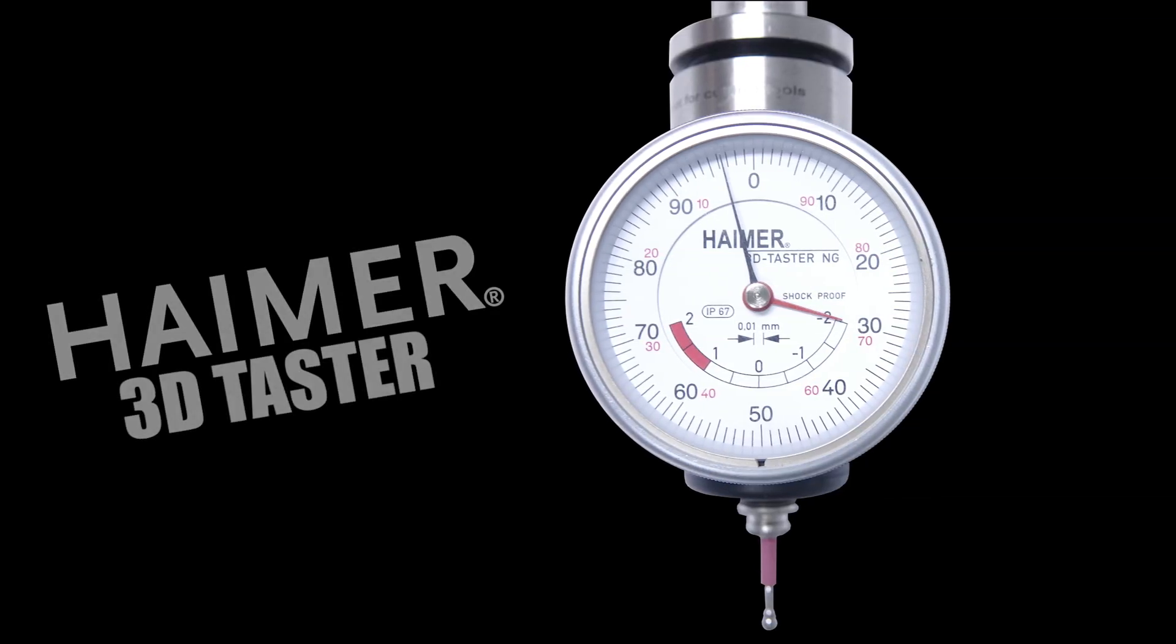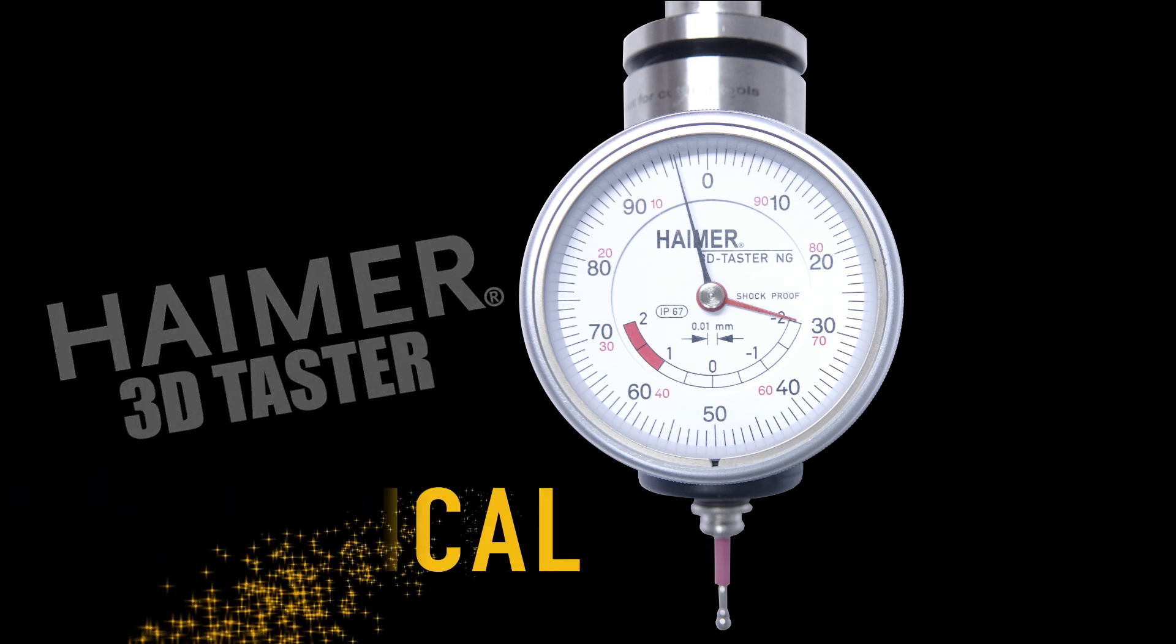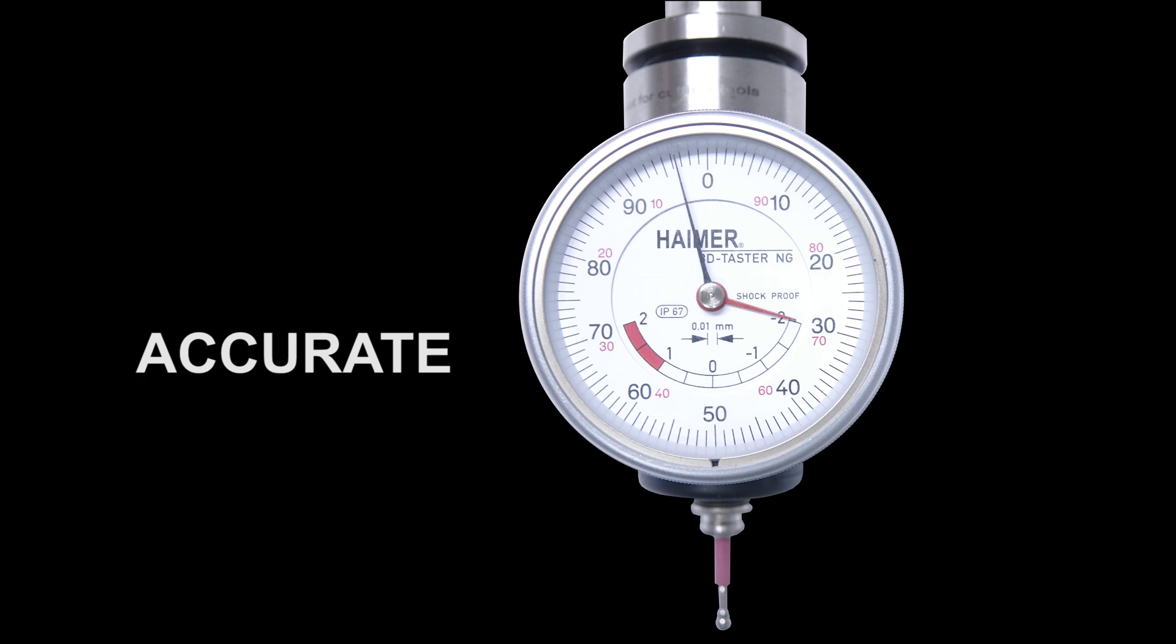Hi folks, the infamous Haimer 3D Taster. Most of us just call it the Haimer. What makes these so magical is not only are they incredibly accurate, but they have the ability to measure both your Z offset as well as X and Y.